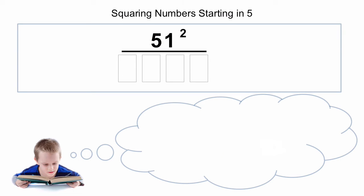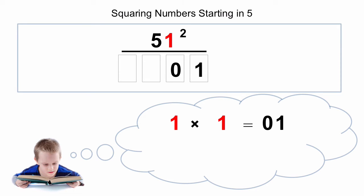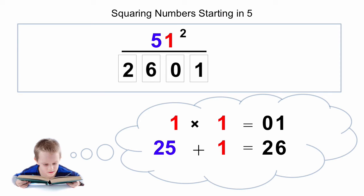Let's look at one more example: 51 squared. First, the units digit is 1, so 1 times 1 is 1. Now because we need a two-digit answer here, we'll put a 0 in front of the 1, so the last two digits of the answer are 01. Because it starts with 5, we add the units digit to 25: 25 plus 1 is 26, and there's our answer: 2,601.